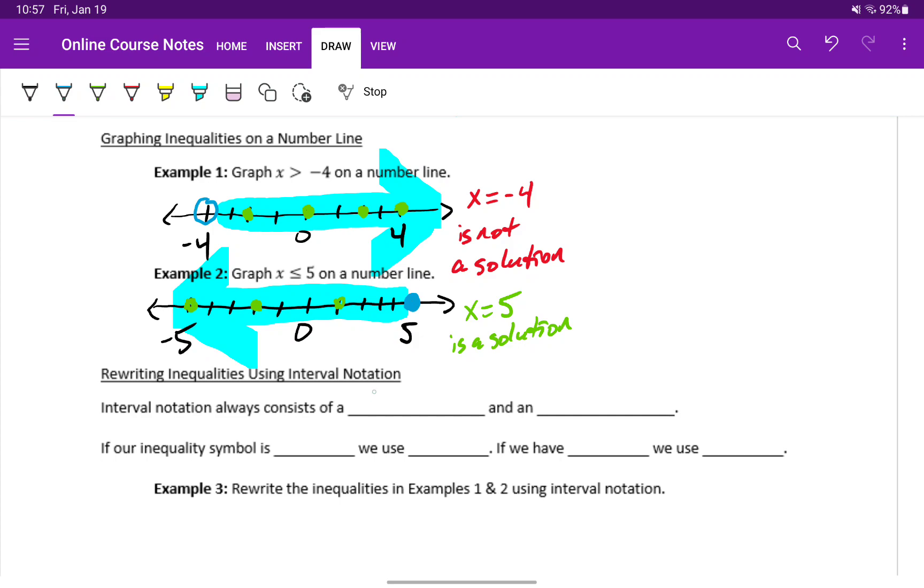Interval notation will always consist of a lower bound and an upper bound, so a smallest and largest value.